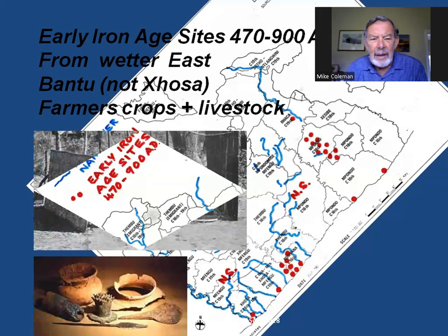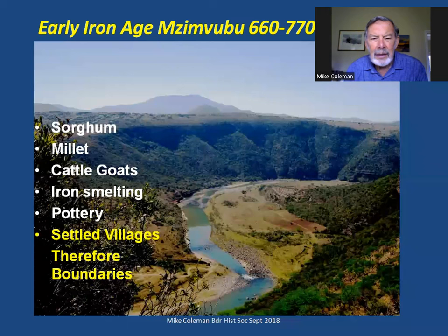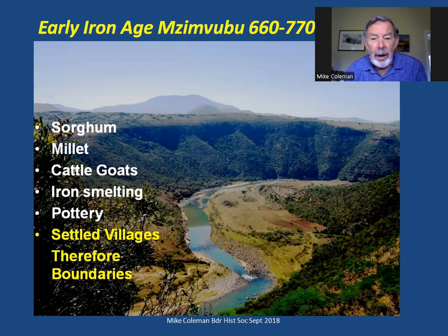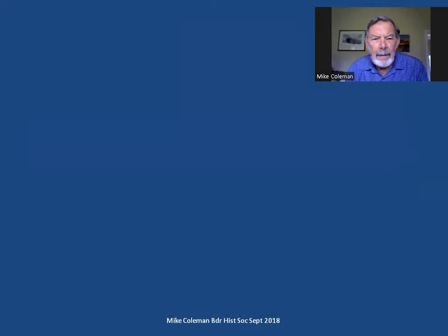These sites imply a different kind of society — these were farmers with crops and some livestock, which implies village settlements. Sites like this one on the Mzimvubu are still occupied and still farmed. They had small grains, cattle and goats, smelted iron, used pottery, and lived in small settled villages. Therefore, they had recognisable boundaries for their communities.